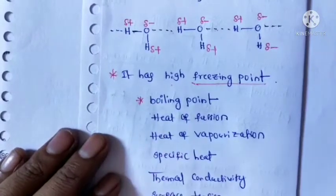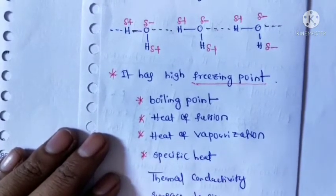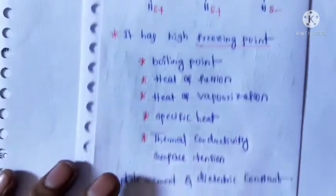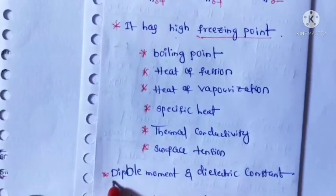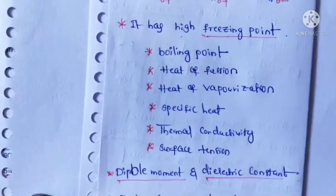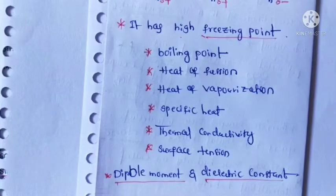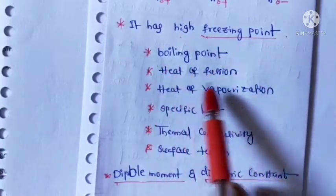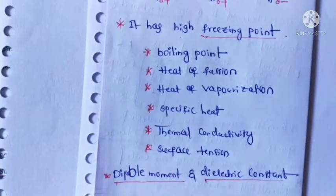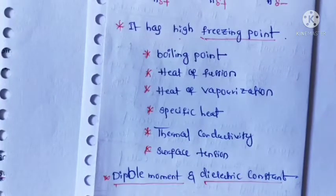Due to hydrogen bonding, water has: high freezing point, high boiling point, high heat of fusion, high heat of vaporization, high specific heat, high thermal conductivity, high surface tension, and also dipole moment and dielectric constant. All these measurable properties are high due to the presence of hydrogen bonding.